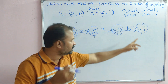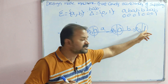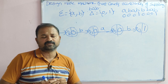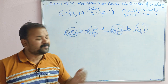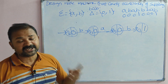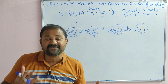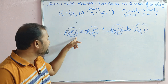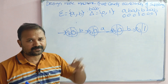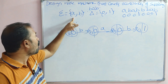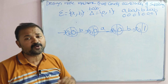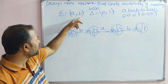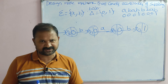Now we have to make this Moore machine into a DFA. In a DFA, on each state we have to apply all the symbols present in the input alphabet, so we need to apply A and B on all the states.